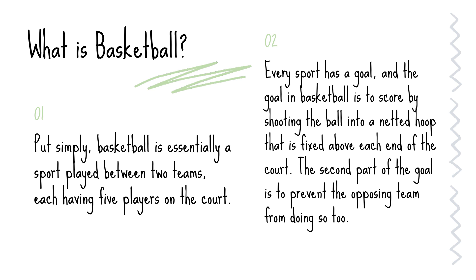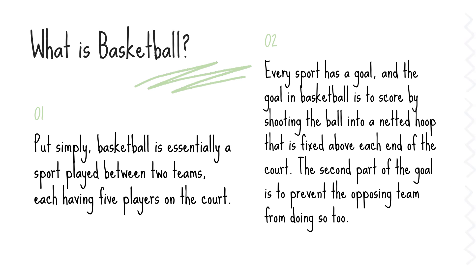Every sport has a goal, and the goal in basketball is to score by shooting the ball into a netted hoop that is fixed above each end of the court. The second part of the goal is to prevent the opposing team, which is the team your team is versing, from doing so as well.